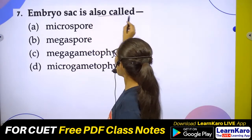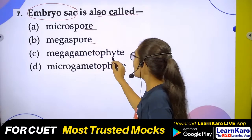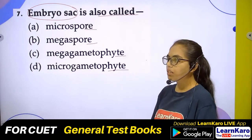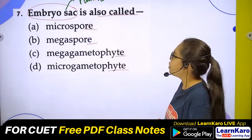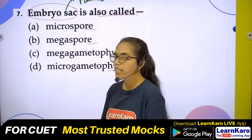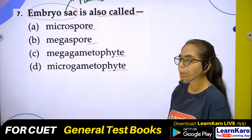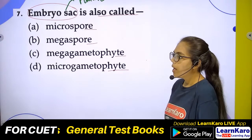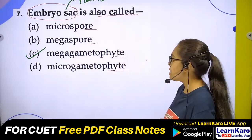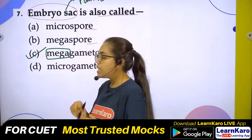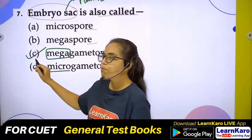Question number 7: Embryo sac is also called — what? Options: Microspore, Megaspore, Megagametophyte, Microgametophyte. The embryo sac represents the female part. We call it the female gametophyte. 'Mega' is used for female parts and 'micro' for male parts. Correct answer is Option C — Megagametophyte.